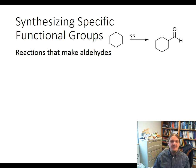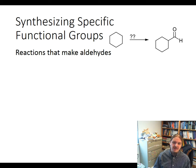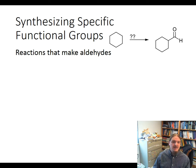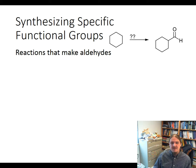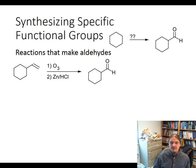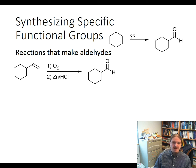Now let's look at examples of synthesizing specific functional groups. What if you had cyclohexane and you wanted to make cyclohexanecarbaldehyde? We are interested in thinking about all the reactions that we know that might yield an aldehyde as the product. Depending on where you are in your study of organic chemistry, you may recognize some or all of these reactions — some come up a bit later in the second semester. One way to make aldehydes is by ozonolysis of an appropriate alkene. Alkenes undergo ozonolysis to make aldehydes and ketones, forming aldehydes if there is a hydrogen at one of those carbons.